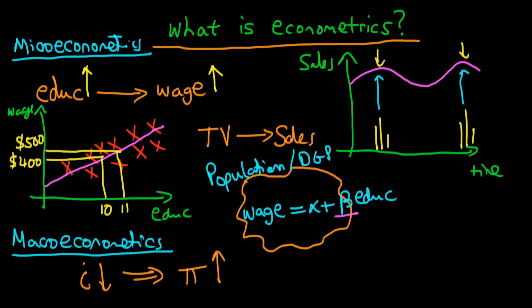But there are other factors which also determine wages, which we group together in our population error term u. These are all the idiosyncratic factors which also affect an individual's level of wages — for example, where does the individual live, are they based in an OECD country, what are their interests, are they pursuing a career like investment banking where they earn lots of money, or are they going into the civil service? Those are all the sorts of things contained within our population error u.